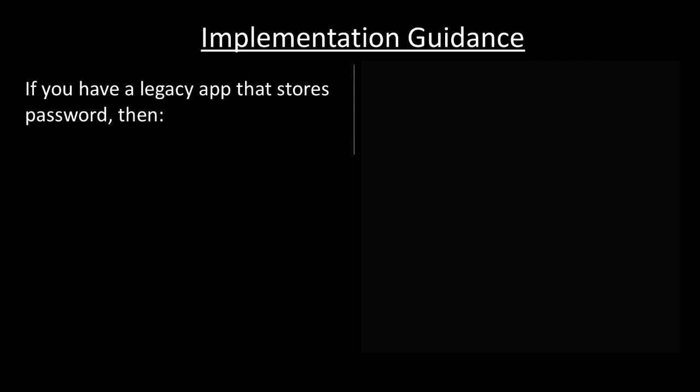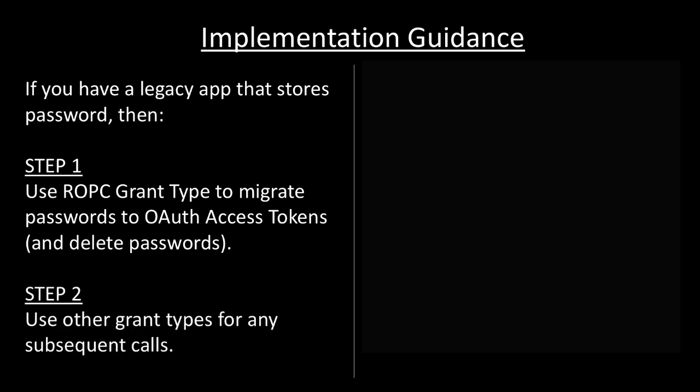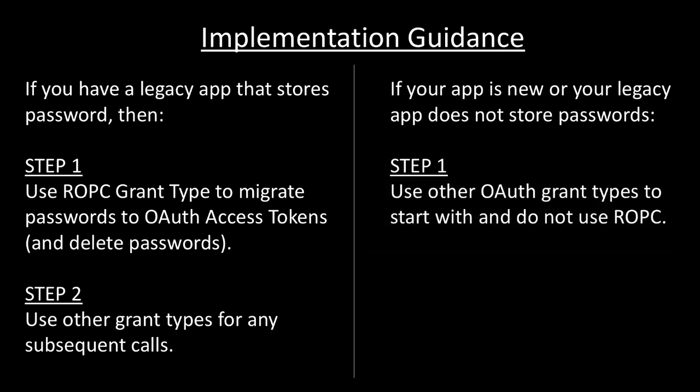So here's the implementation guidance. If you have a legacy app that stores passwords, then Step 1: use the ROPC grant type to migrate passwords to OAuth access tokens and delete the passwords. Step 2: use other grant types for any subsequent calls. If your app is new, or your legacy app doesn't store passwords, then there's only one step: use other OAuth grant types to start with and do not use ROPC.